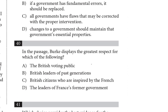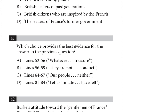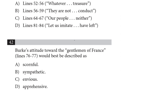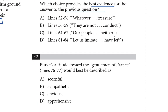Question 40: in the passage, Burke displays the greatest respect for which of the following? I've got to read the whole passage to understand this one. And question 41 needs me to find support for question 40. That's all I need to do in this step. Question 42 — the last question — has a line reference at lines 76 to 77. Let's underline those lines, looking for the words 'gentlemen of France.' And we're done. If you do that skimming step right, it should take you less than a minute, and you're ready to dig into the passage.